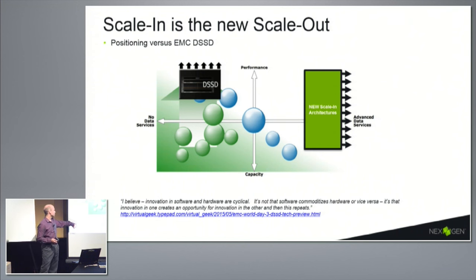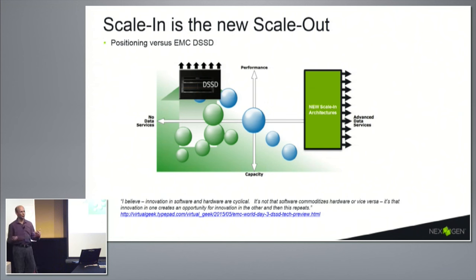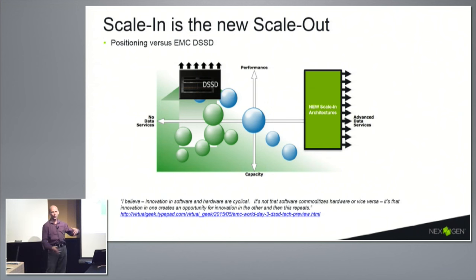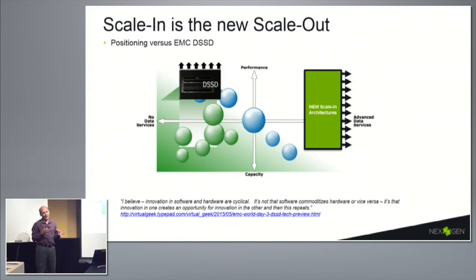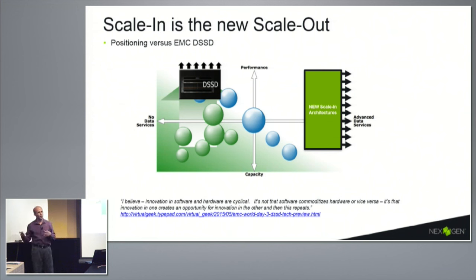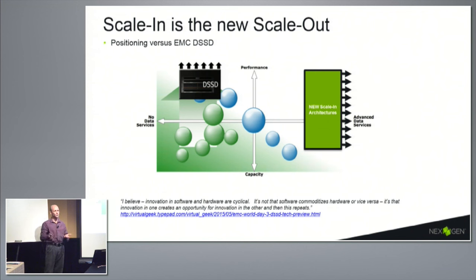Innovations in hardware and software are cyclical and simple: hardware speeds up, software has to catch up; software gets ahead, hardware has to catch up. NVMe is a hardware change as far as connectivity goes, but the software needs to be there to use it and bring that functionality around. Just the hardware alone is helpful, but hardware combined with software is where you really see good benefits.